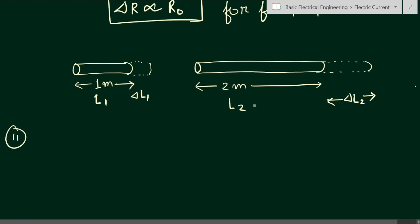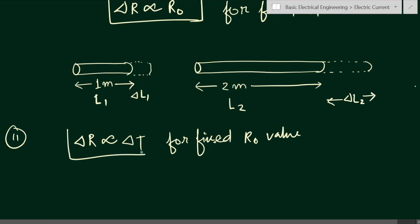The second property: the change in resistance delta R is directly proportional to the change in temperature delta T, and this is valid for a fixed R0 value. So for the same type of material, same length, and same area of cross-section, the change in resistance is directly proportional to delta T, the change in temperature. Or we can say that the increase in resistance is directly proportional to the increase in temperature.